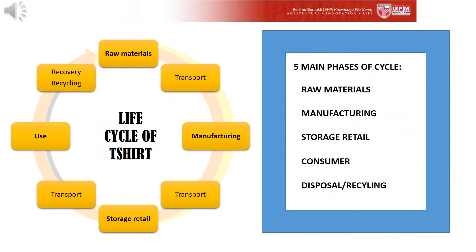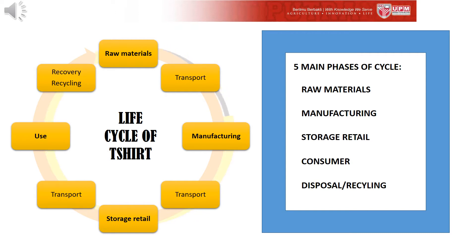Next, let's move on to the life cycle of the t-shirt, which starts from raw materials through to recovery and recycling. In this cycle, we will focus on five phases: raw materials, manufacturing, storage, retail, consumer, and disposal and recycling.